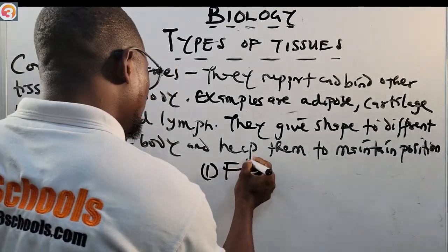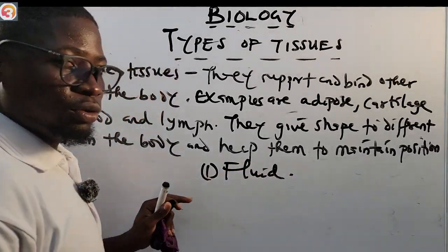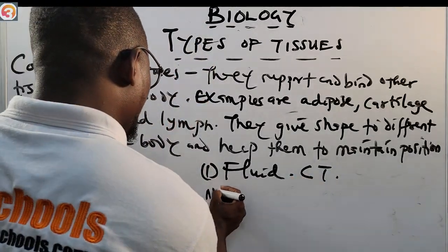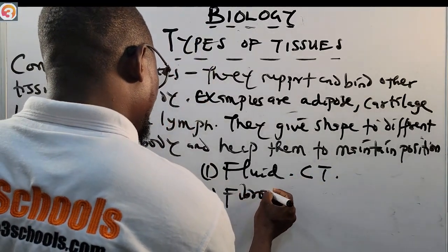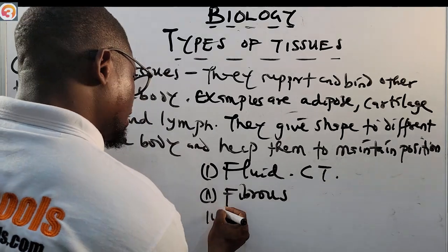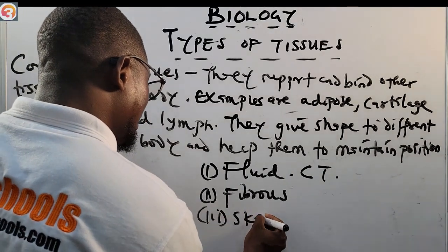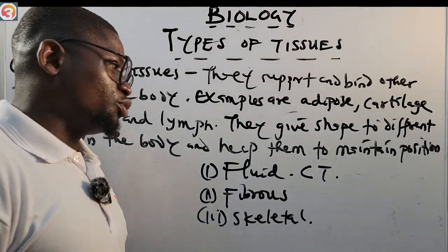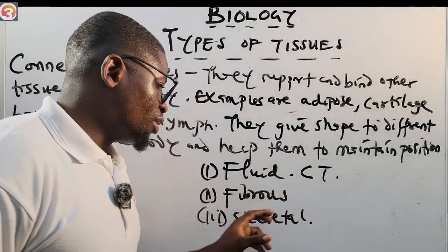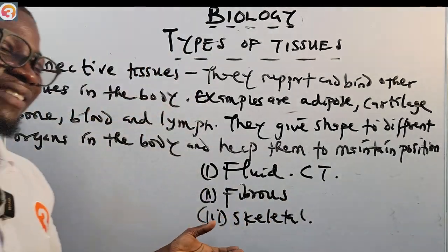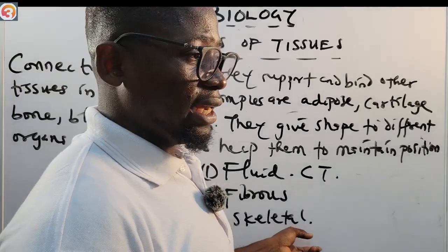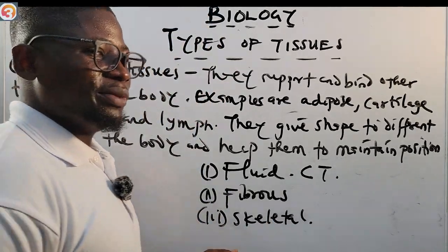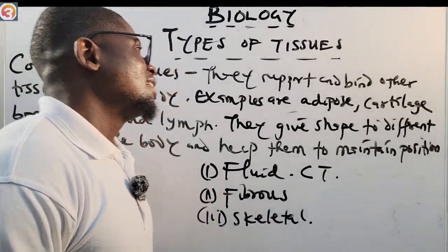There are three types of connective tissues: number one, fluid connective tissue; number two, fibrous connective tissue; and number three, skeletal connective tissue. We'll go deeper into these in the future.